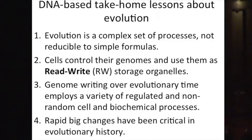The third point is that genome writing occurs over evolutionary time as genomes and DNA molecules change, and it employs a wide variety of regulated and non-random cell and biochemical processes. In other words, genetic change does not come about from chance or accidents or mistakes — it comes about because cells actively change their DNA. If a cell has damaged DNA and is incapable of repairing it, the cell dies; it doesn't leave a mutant cell behind.